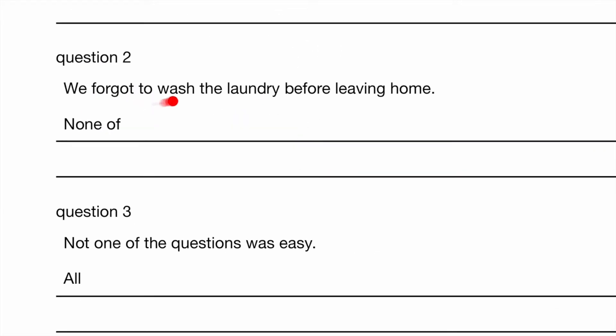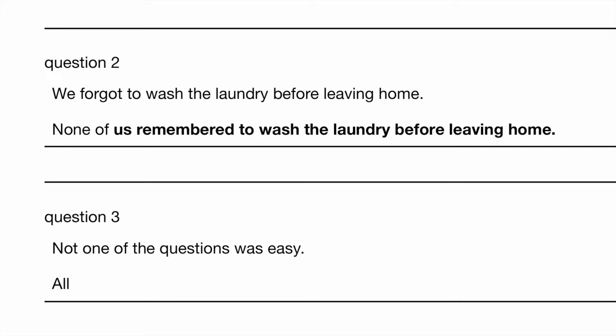Question 2: We forgot to wash the laundry before leaving home. None of... what's the opposite of 'forgot'? That's 'remember,' isn't it? So: not one of us remembered to wash the laundry before leaving home. Because we are using the past tense, 'forgot' is in the past tense and 'remembered' is in the past tense. We are not concerned with singular or plural here since it's past tense.